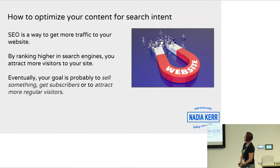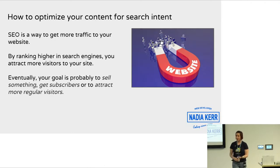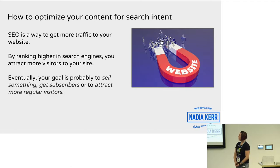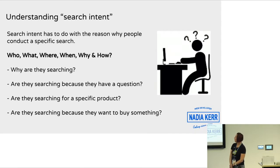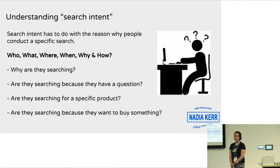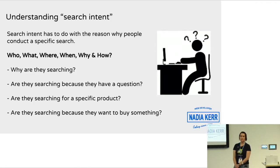How to optimise your content for search intent. SEO is a way to get more traffic to your site by ranking higher in the search engine. Eventually the goal is to sell something, get people to subscribe, or attract more visitors. We need to understand the search intent: the best way to get more traffic is by optimising the website. Search intent has to do with the who, what, where, when, why, and how. Why are they searching? What are they searching for? Did they come because they're asking a question? Are they after a specific product? Are they searching because they want to buy something? You've got to think about what keywords, phrases, and information they searched to come through to your website.